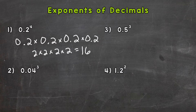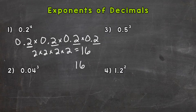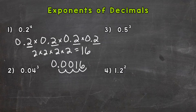Now a whole sixteen is not the answer to this problem. We need to take a look at the original expanded out two tenths and see how many digits are behind or to the right of a decimal — that's how many digits our answer needs to have behind the decimal. We have one digit behind the decimal, two, three, four. So our sixteen needs four digits to the right of the decimal. Moving the decimal in four times gives us sixteen ten-thousandths.